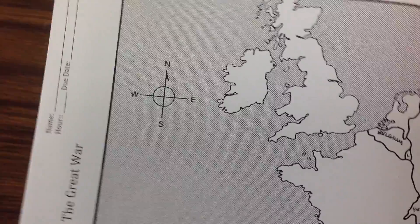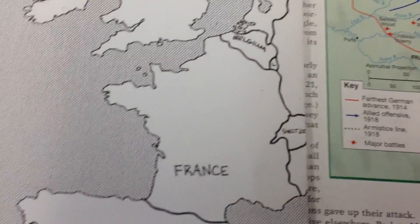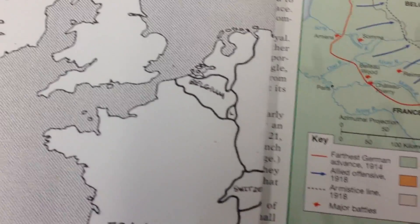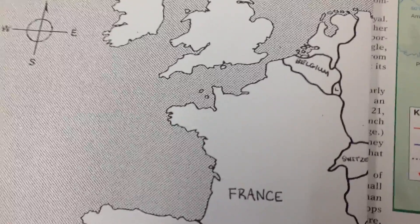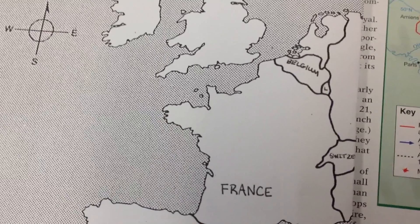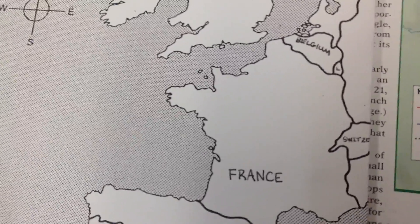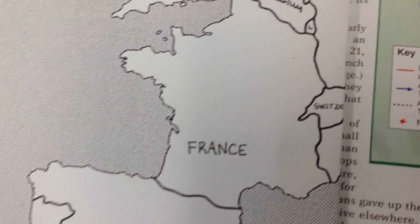So when I get to number four, it says to use a red battle star. If you use a different color, make sure you use that same color in your key. You're going to label battles, and we're going to use page 699 in the textbook to help.